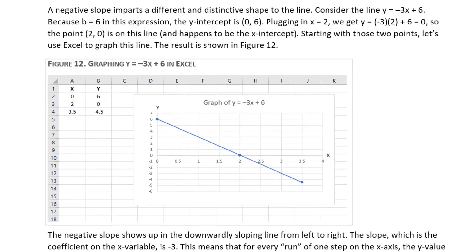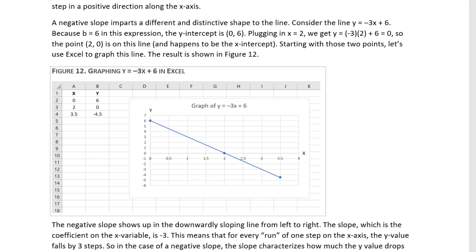Now a negative slope imparts a different and distinctive shape to the line. Let's consider the line y equals negative 3x plus 6. Because b equals 6 in this expression, the y-intercept is 0 comma 6. To calculate another point, let's plug in x equals 2. We get y equals negative 3 times 2 plus 6, which equals 0. So the point 2 comma 0 is on this line, and that actually happens to be the x-intercept.